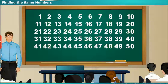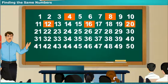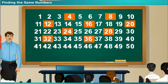Look at the numbers which are in common given by Haritha and Pavan. The numbers are 4, 8, 12, 16, 20, 24, 28, 32, 36, 40, 44, and 48.